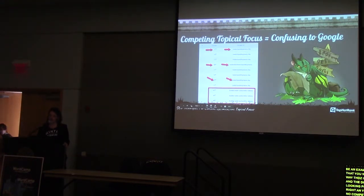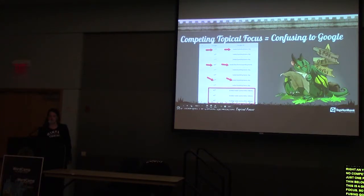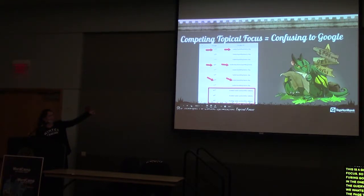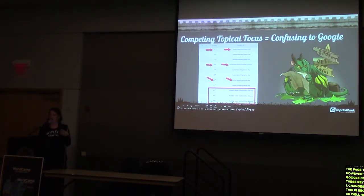Competing topical focus is a problem — it confuses Google. You want to be very specific: one page that is the most relevant for the query. In the example shown, there were other URLs Google considered equally relevant for the target keywords. Every time the URL changes, the position in Google changes too, because the pages were overlapping in focus and Google wasn't sure which URL to rank, so it kept testing different ones — causing rankings to jump up and down.